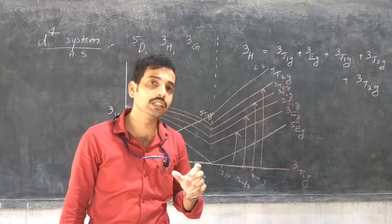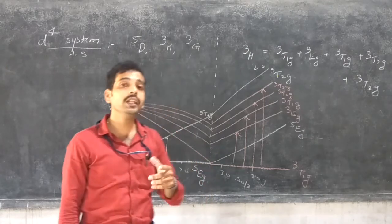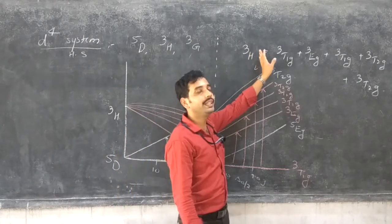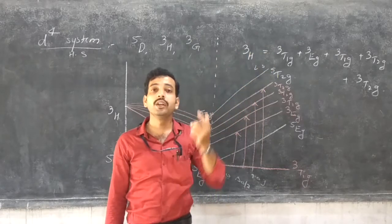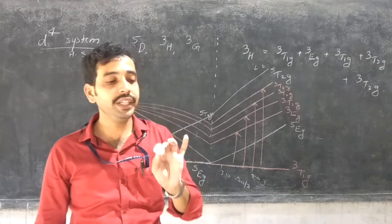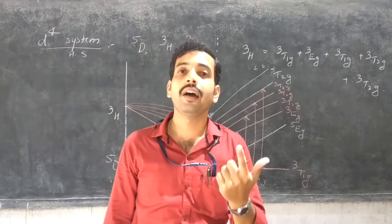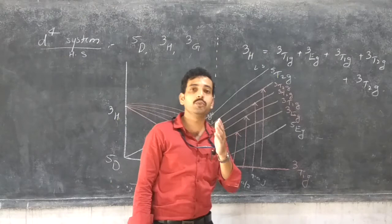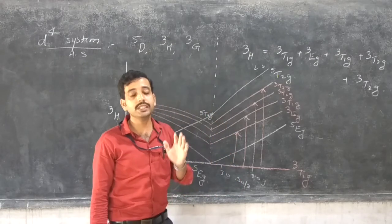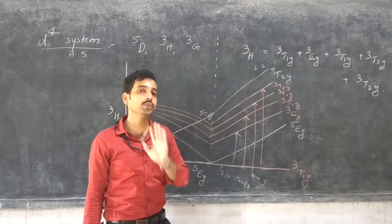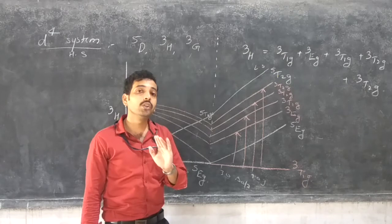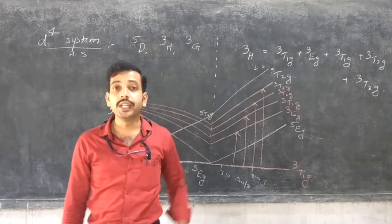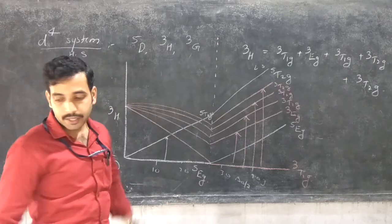It is a little bit difficult. That is why you must memorize the terms of the 3H, 4F, 4P, or S, P, D, F, G, H, and I terms. Up to the I term, the terms must be memorized; otherwise it is difficult to draw the Tanabe-Sugano diagram for low spin as well as high spin complexes. Next, we move on to the D5 system.